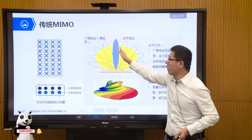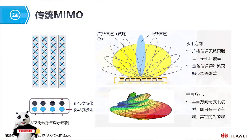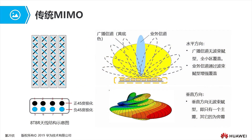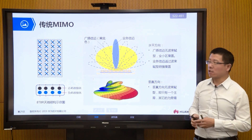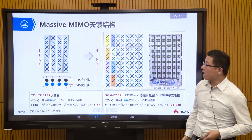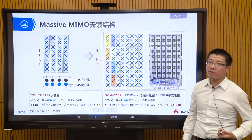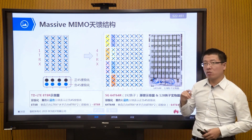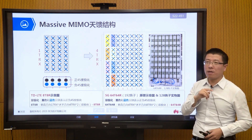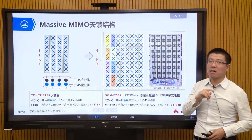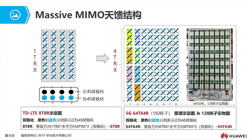But in the 5G era, we use massive MIMO. This technology was also applied in the 4G era where we called it 3D MIMO; in the 5G era, we call it massive MIMO. What changes does massive MIMO bring? I changed from the previous 2 antennas, 4 antennas, 8 antennas — to a 64-channel antenna.